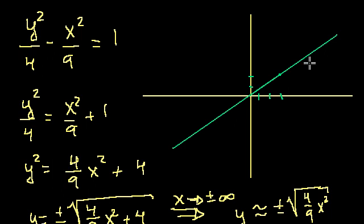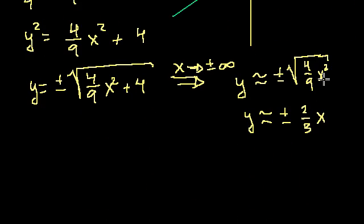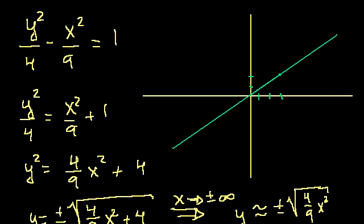And the other asymptote is y is going to be equal to minus 2 thirds x, right? Because it's plus or minus 2 thirds x. So minus 2 thirds x, you go down 2 for every 3 that you go out. So that point will show up. So you go down 2 for every 3 that you go out. So if I draw that asymptote, it'll look something like there. And we've drawn our asymptotes.